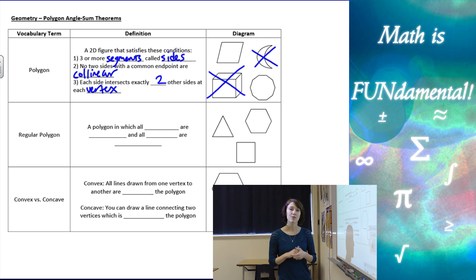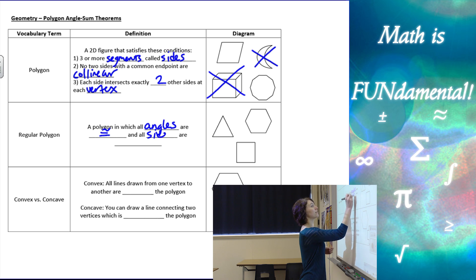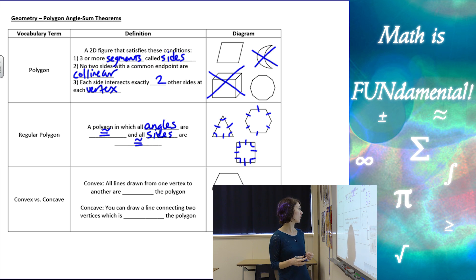The second definition we have is a regular polygon. A regular polygon is a polygon in which all angles are congruent and all sides are congruent. This would be a regular triangle or equilateral triangle. All sides are the same, all angles are the same. Same with all of these. All have the same sides, the same angles. It's a regular polygon.